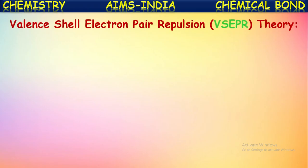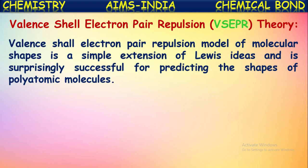Valence Shell Electron Pair Repulsion Theory, also called VSEPR theory, is a simple extension of Lewis ideas. In the earlier sessions we have seen how molecules are represented by using Lewis dot structures. This VSEPR theory is just an extension to these Lewis ideas and is surprisingly successful for predicting the shapes of polyatomic molecules.